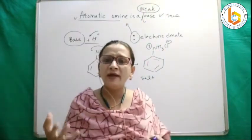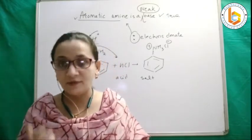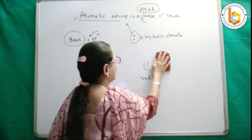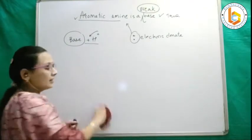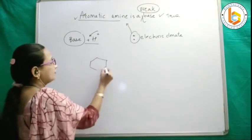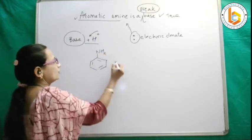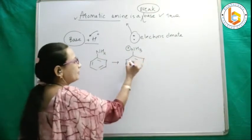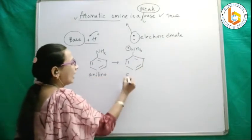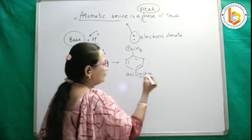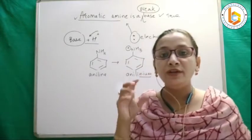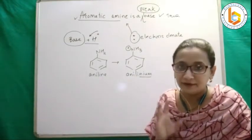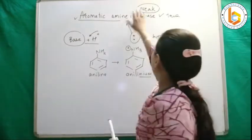Now let us explain why aromatic amine is a weak base. For example, I have aniline. And if aniline can donate its electrons, it becomes anilinium because it is donating its electrons. Aniline converts to anilinium. Anilinium means it bears a positive charge — like we say ammonium or carbonium. So when it bears a positive charge, I call it anilinium. We explain that aromatic amine is a weak base.